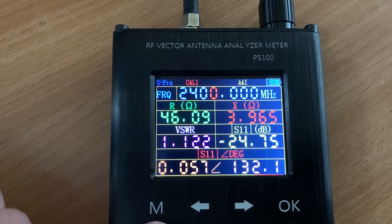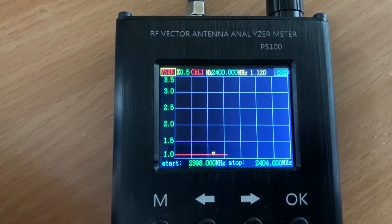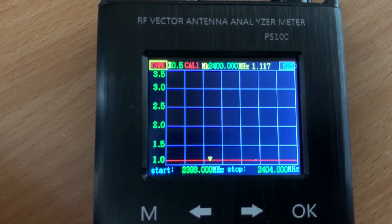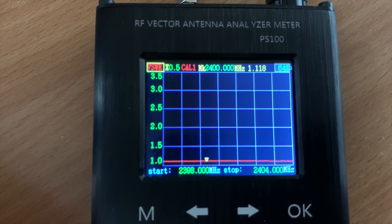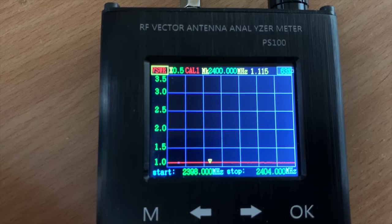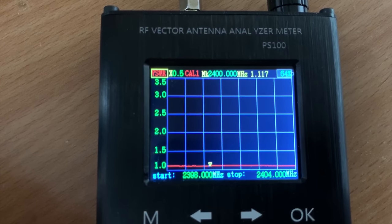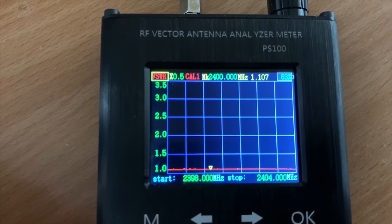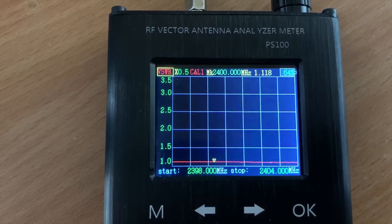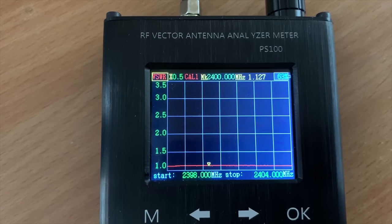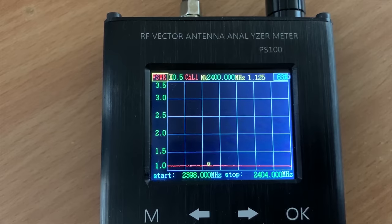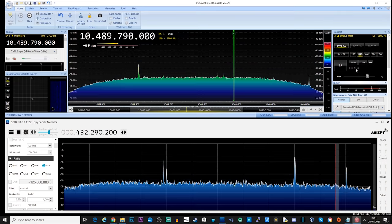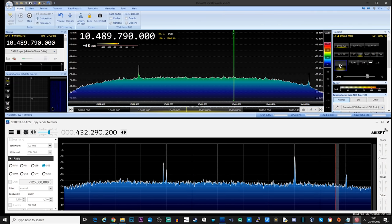So as you can see here, I have a nice low SWR of around 1.1 at 2.4 gigs. And if we switch over to the sweep screen, we can see a really nice low SWR between 2.398 gigs and 2.404 gigs. Obviously, we don't need that much bandwidth for the QO100 uplink, but it's nice to see that it's quite broadbanded.